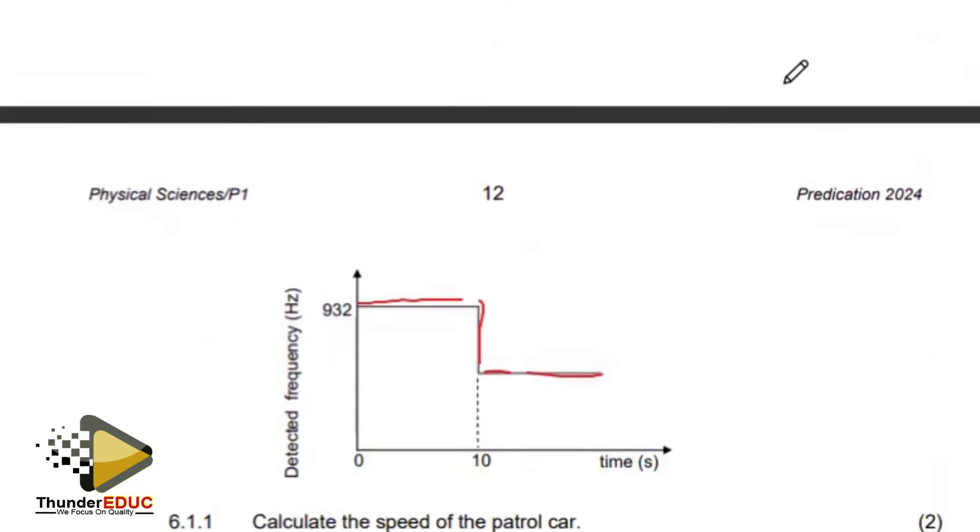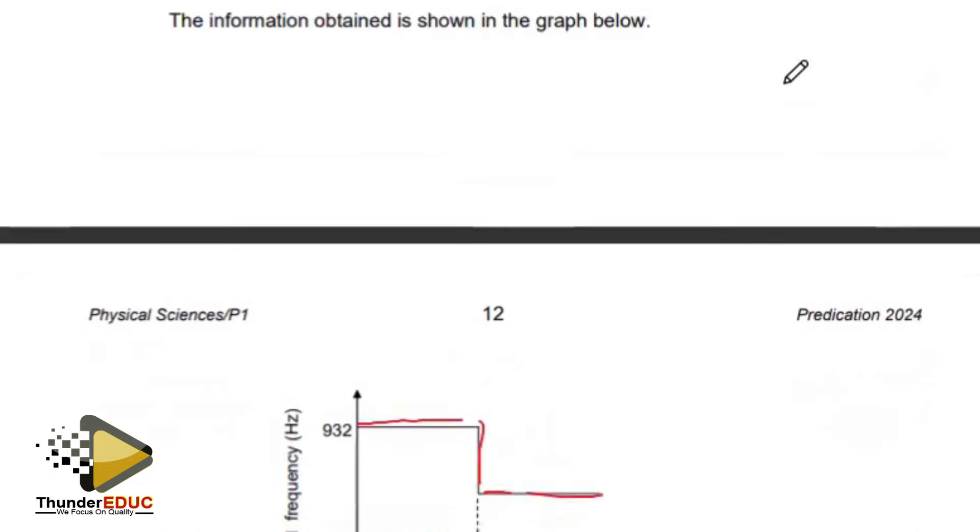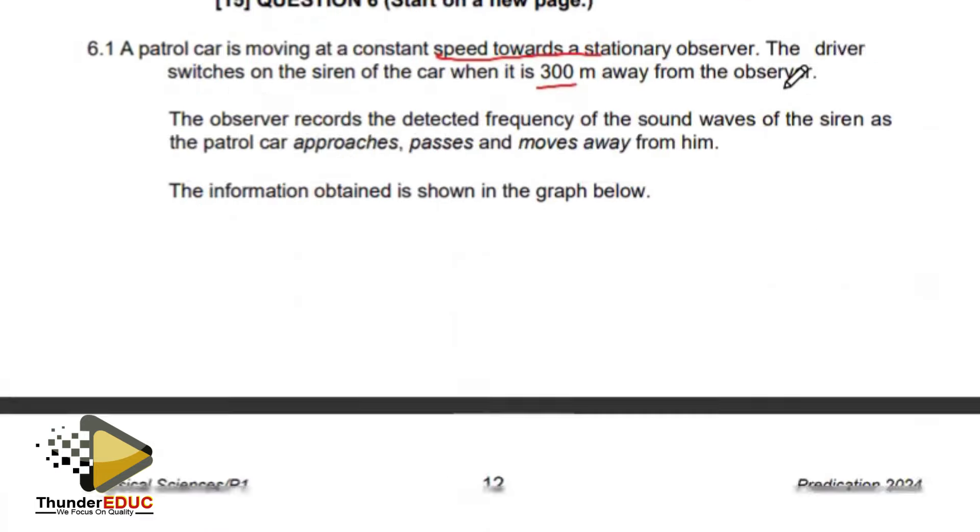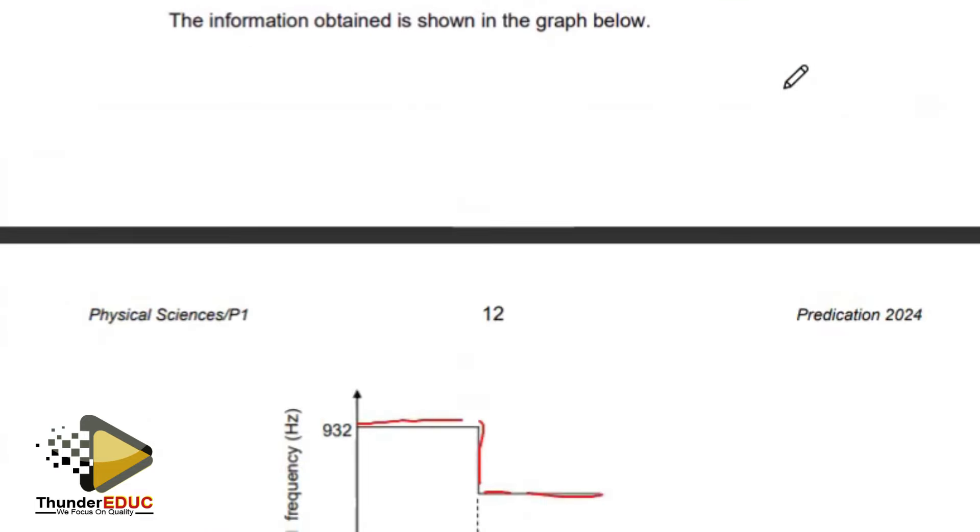If this is the source, and this is the observer or the listener, they're telling us that the distance there is 300 meters.